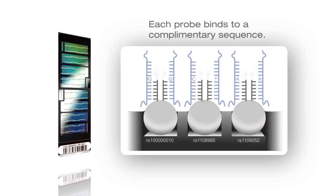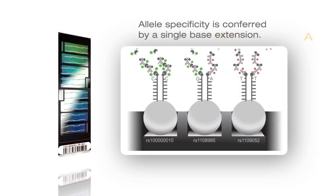Each probe stops one base before the locus of interest. Allele specificity is conferred by a single base extension that incorporates one of four labeled nucleotides. Natural competition among the four bases minimizes bias.